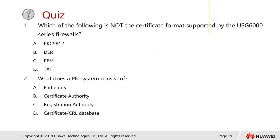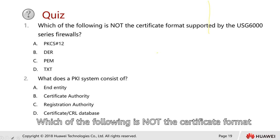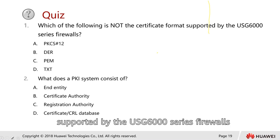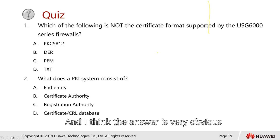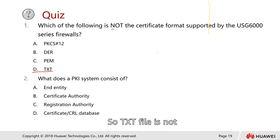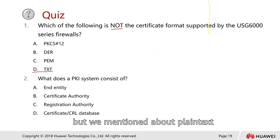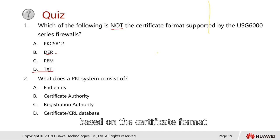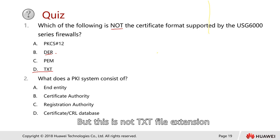We come to a quiz question. The first question is: which of the following is not the certificate format supported by the USG 6000 series firewall? The answer is D. Look carefully — the question is asking for 'not.' A text file is not a certificate format. We mentioned about plain text, but the format of the plain text is based on the certificate format — we can actually read it using Notepad, but this is not a TXT file extension.